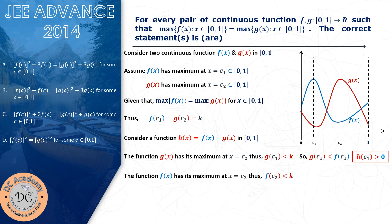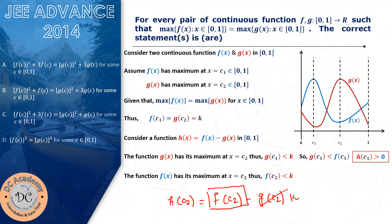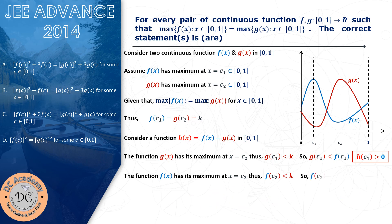Now consider h(c2) = f(c2) − g(c2). Here g(c2) is replaced by k. Observe that f(c2) must be less than k, because f(x) attains its maximum value at c1, not at c2. So by the definition of local max, all other values of f(x) in [0, 1] are less than k. Therefore h(c2) = f(c2) − k < 0.